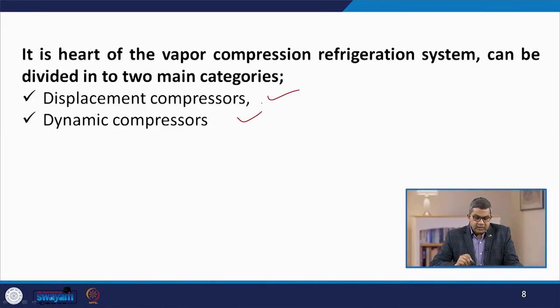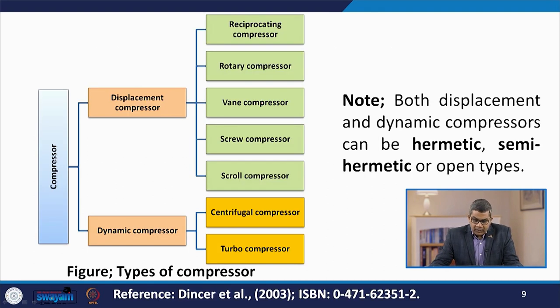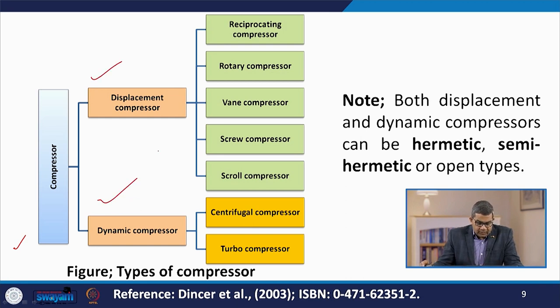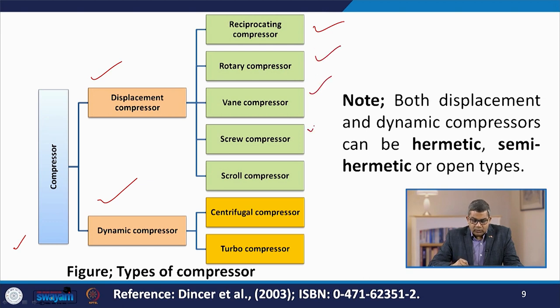As the heart of the vapor compression refrigeration system, the compressor can be divided into two main categories: displacement compressors and dynamic compressors. Displacement compressors are subdivided into five categories: reciprocating, rotary, vane, screw, and scroll compressors. Dynamic compressors are subdivided into centrifugal and turbo compressors. Compressors may also be hermetic, semi-hermetic, or open type.